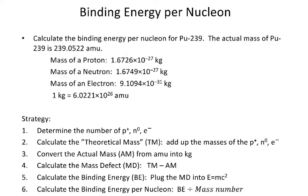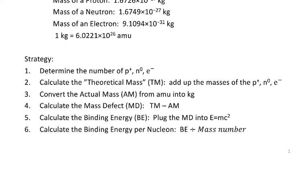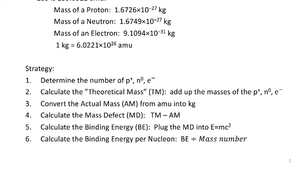Our strategy is going to be as follows. The first thing we need to do is determine the number of protons, neutrons, and electrons. We'll then take that information and use it to calculate the theoretical mass — however many protons, neutrons, and electrons there are, we'll add up their masses from what we're given, and that'll be what I call the theoretical mass.